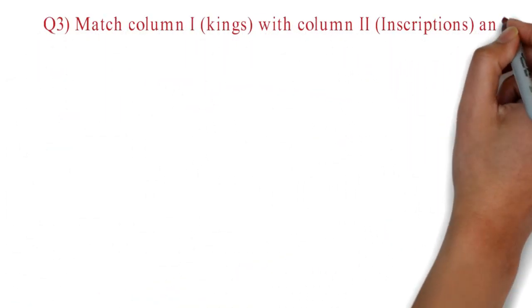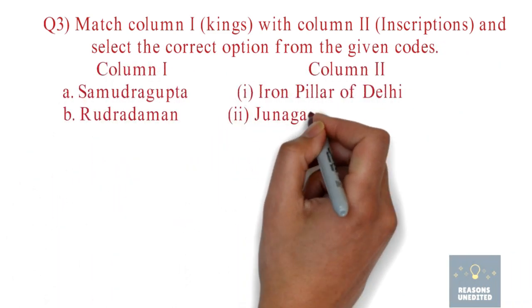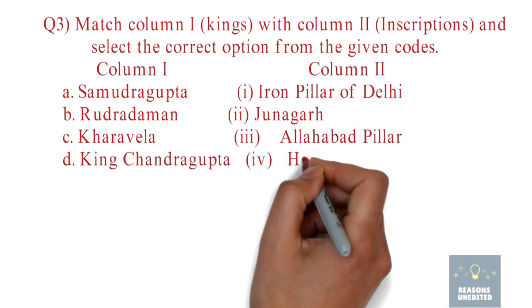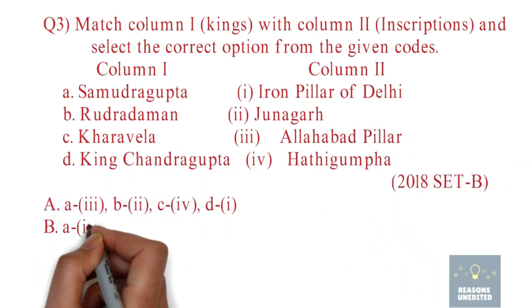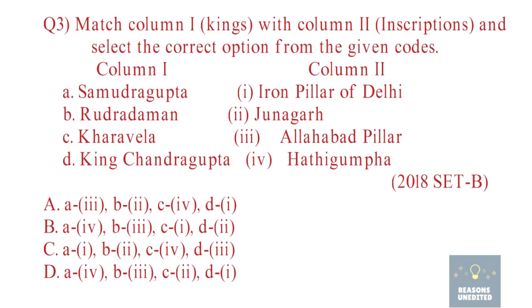Question 3. Match Column 1 Kings with Column 2 Inscriptions and select the correct option. Column 1: Samudra Gupta, Rudradaman, Karavela, King Chandragupta. Column 2: Iron Pillar of Delhi, Junagar, Allahabad Inscription, Hathi Gumpa. This is a match-the-following question. The correct option is Option A: Samudra Gupta — Allahabad Inscription, Rudradaman — Junagar, Karavela — Hathi Gumpa, King Chandragupta — Iron Pillar of Delhi.